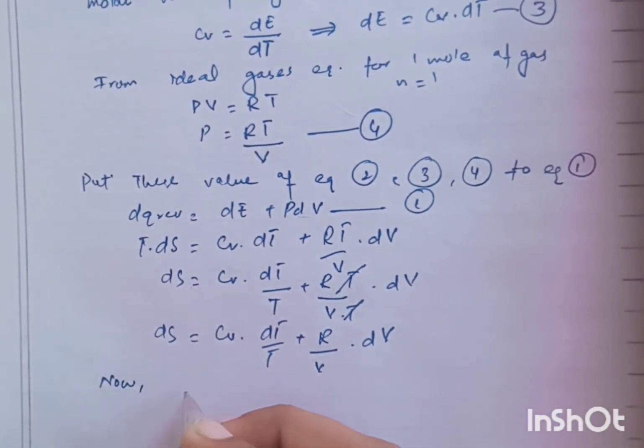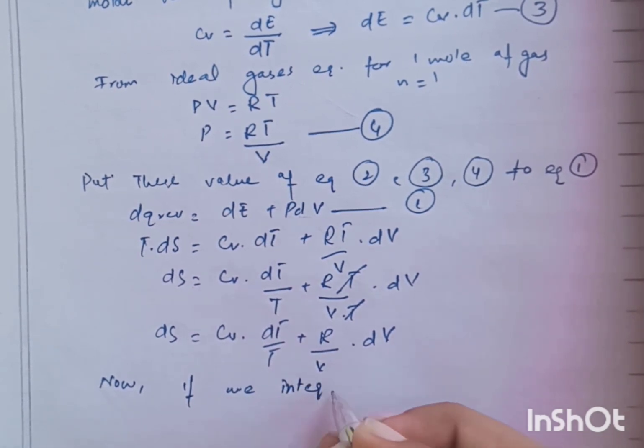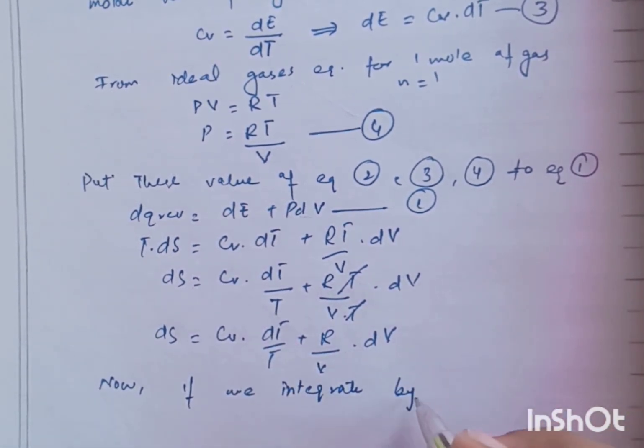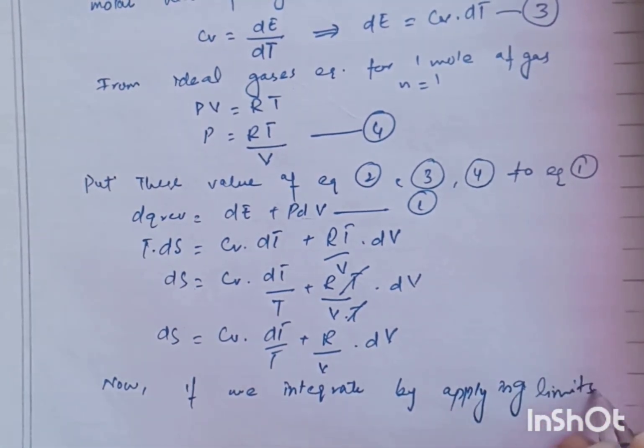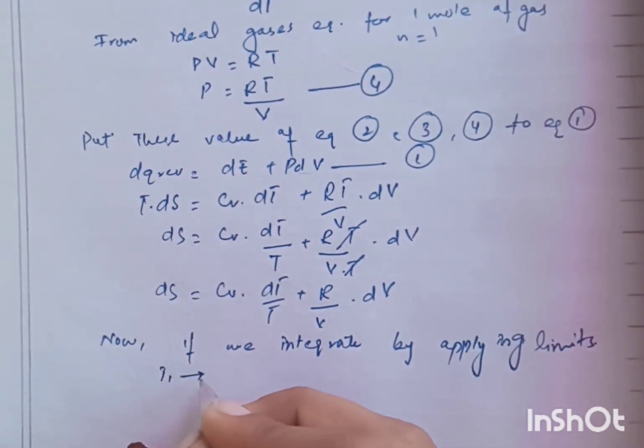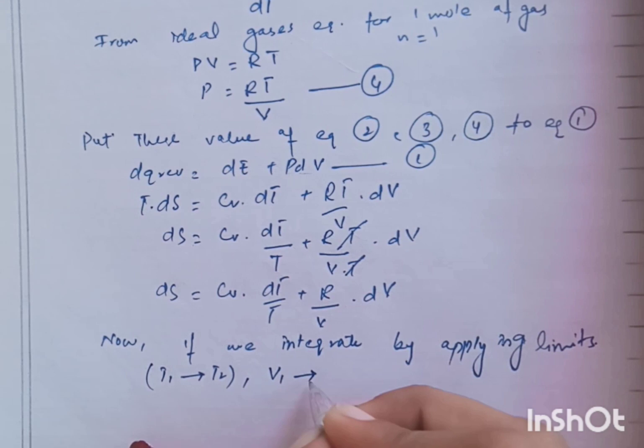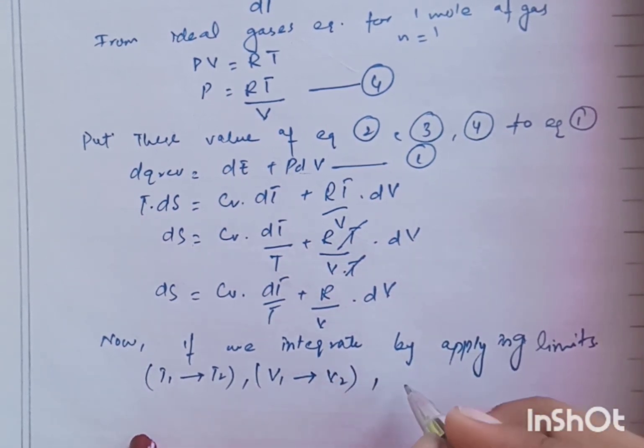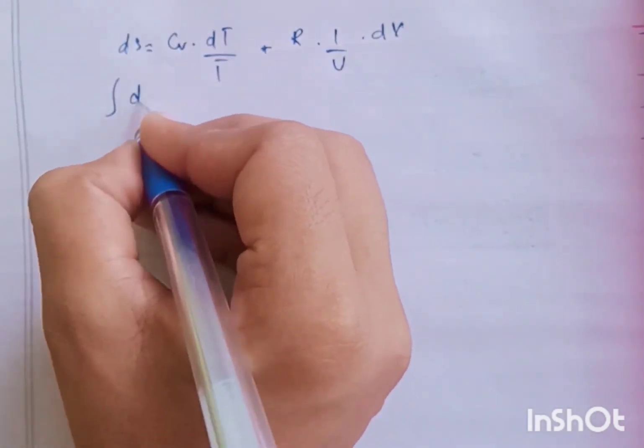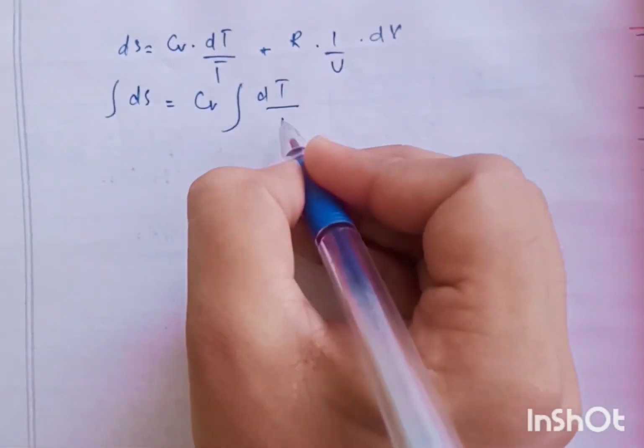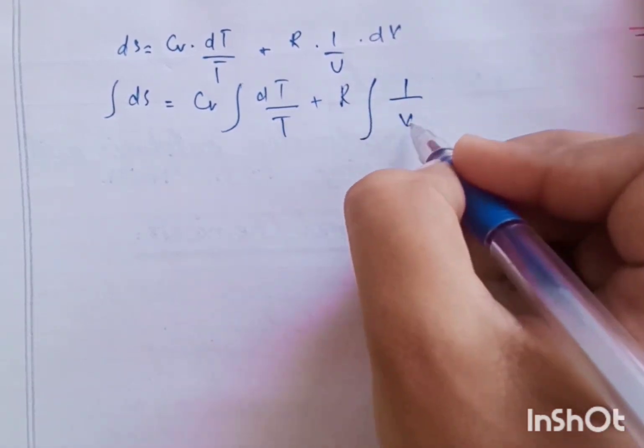Now, if we integrate by applying limits. Limits are T1 to T2, V1 to V2 and S1 to S2. As we know, T1 was the initial temperature, V1 volume was the initial and S1 was the initial entropy. And these changes from T1 to T2 and V1 to V2 and S1 to S2. Here we apply integration.